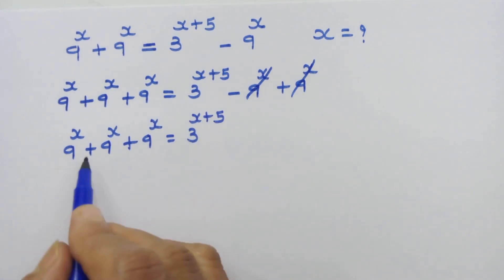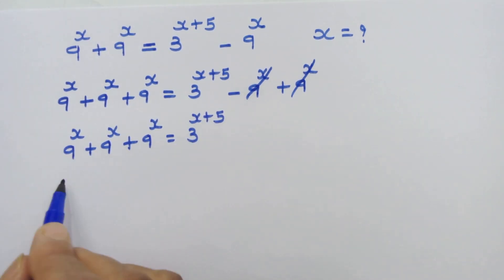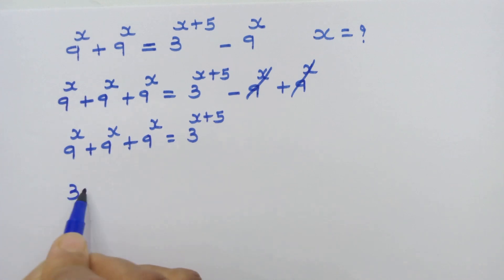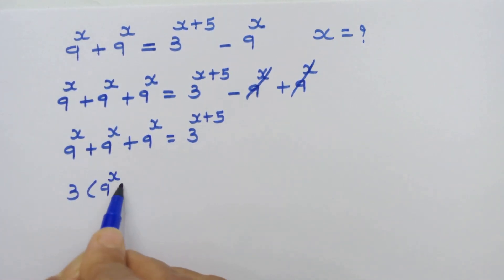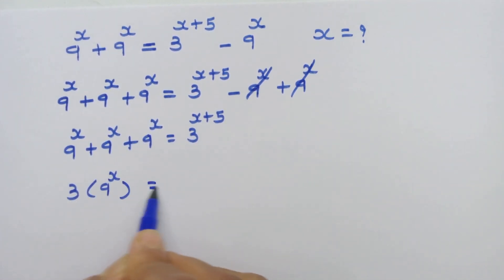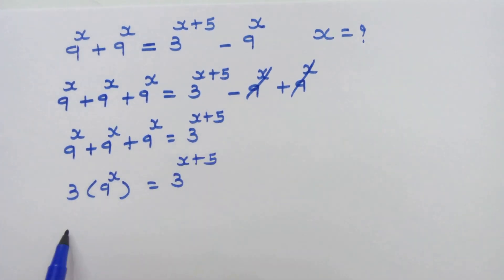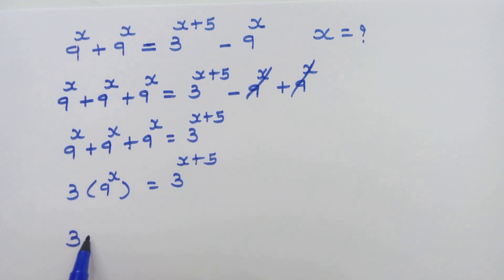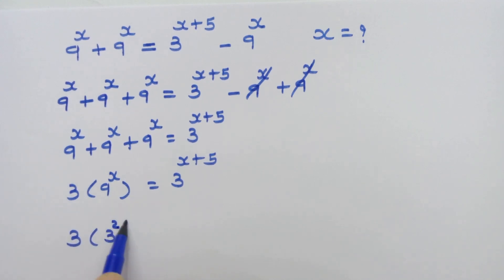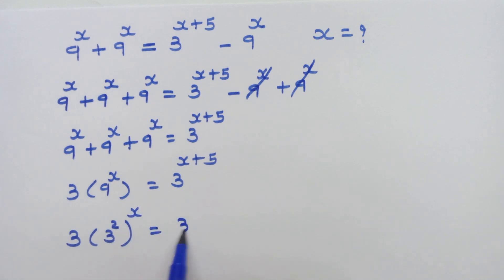Now we have 3 times 9 raised to x, so we can write 3 into 9 raised to x is equal to 3 raised to x plus 5. Now 9 is 3 squared, so we can also write this as 3 squared whole raised to x is equal to 3 raised to x plus 5.